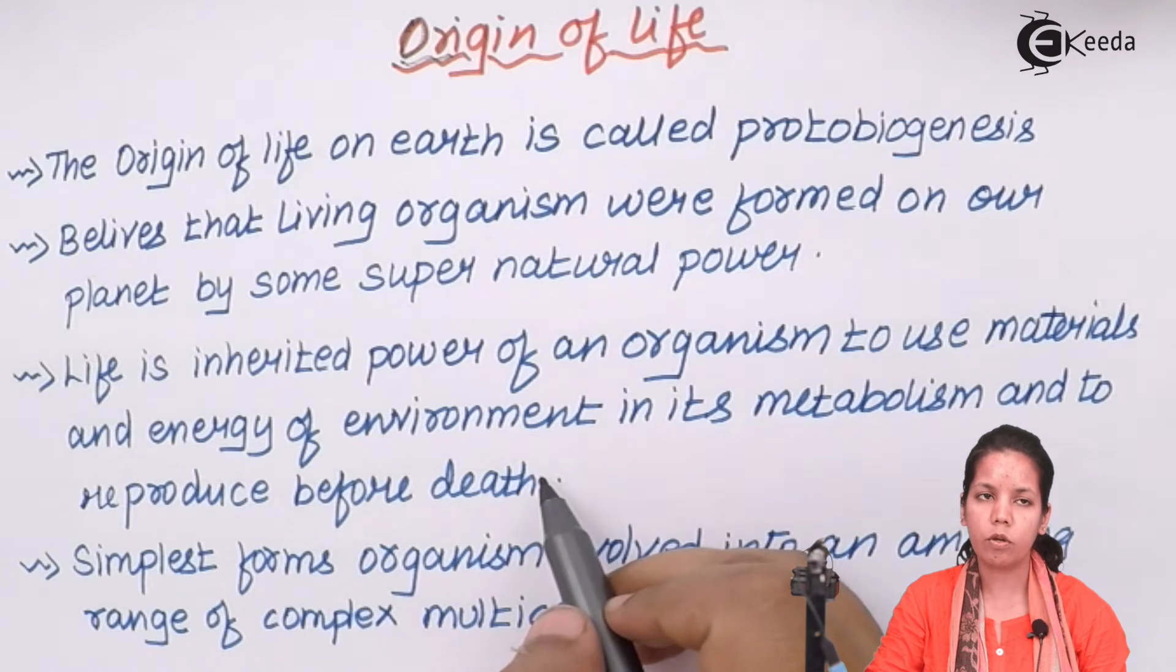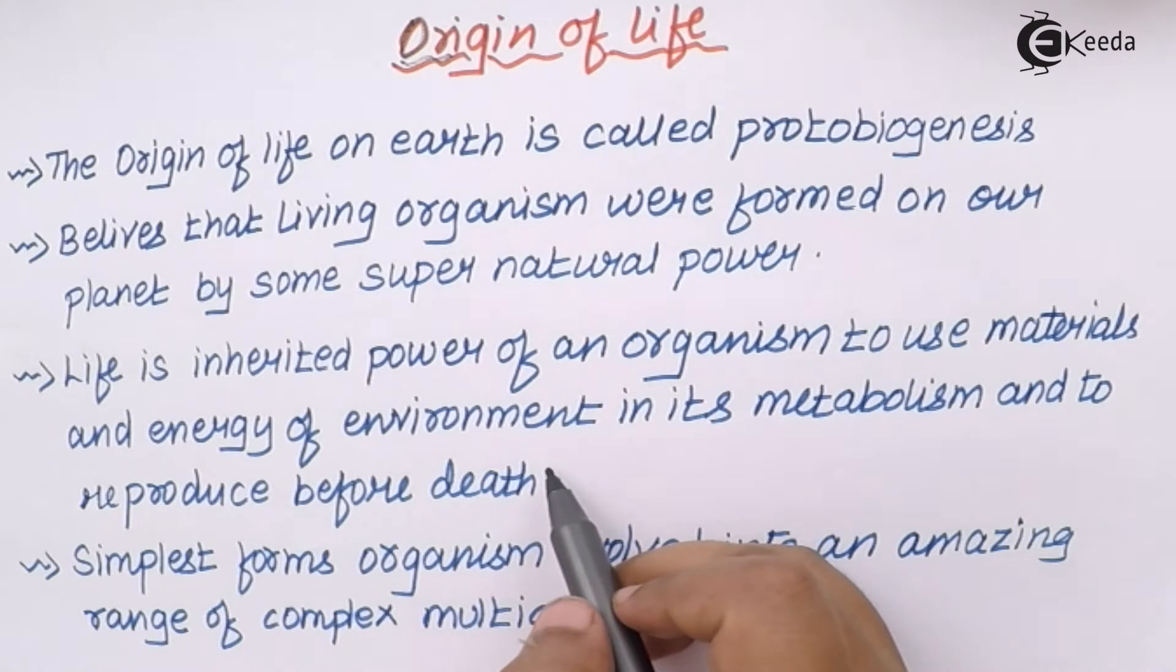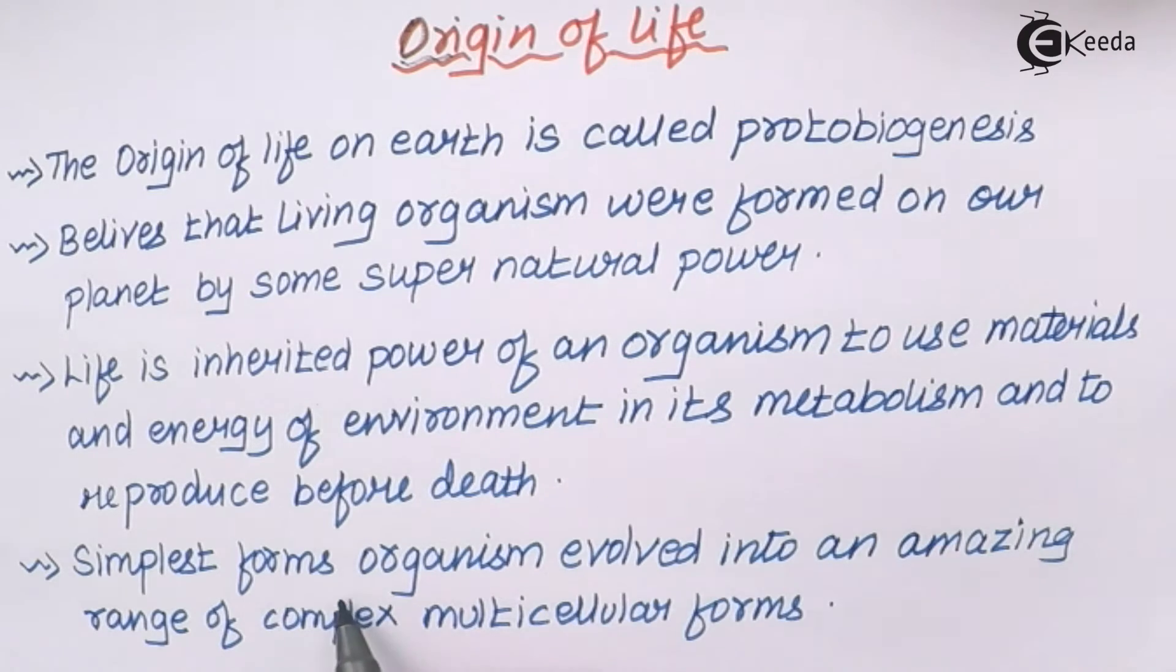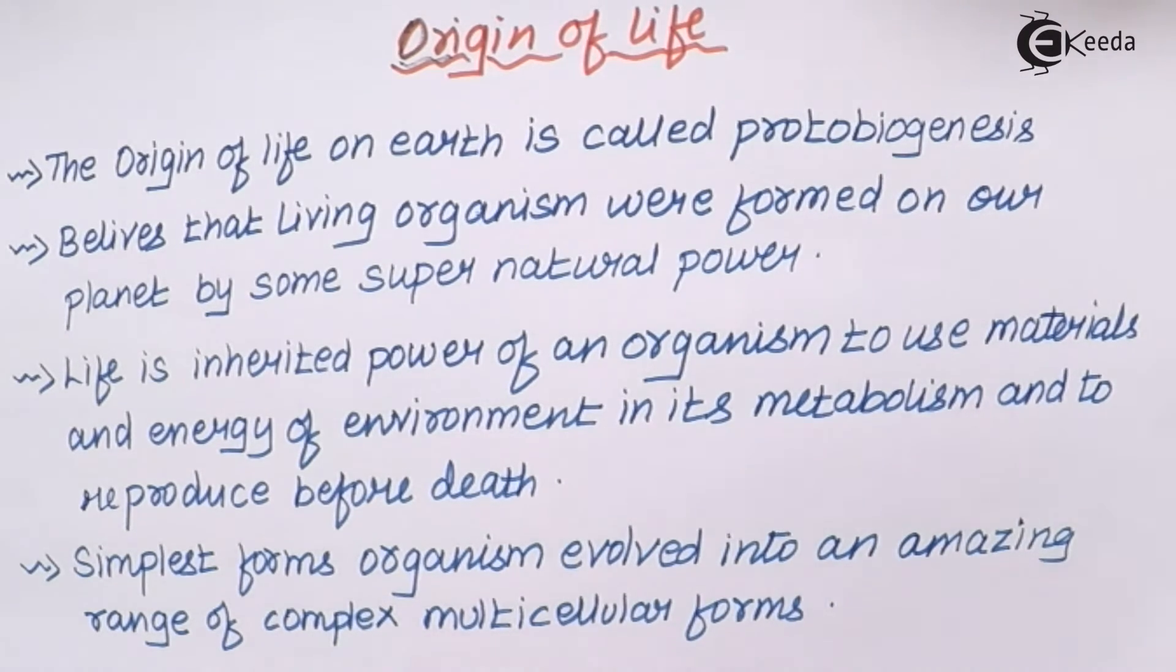So basically, it is the process of using energy to do your anabolism, metabolism, which is your utilization of energy, and finally produce an offspring which is similar to you. Now, simplest form of organisms evolved to an amazing range of complex multicellular forms. Life on earth started with a simpler, or you can say, a type of chemotrophic bacteria or autotrophic. And as we progressed, there were multicellular organisms like human beings which were produced on earth.